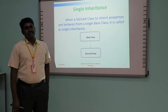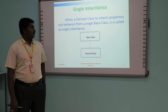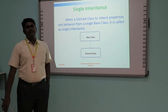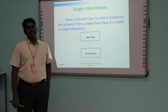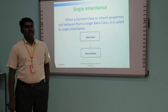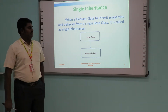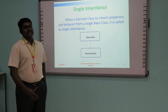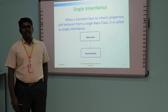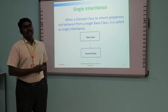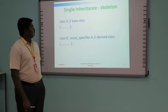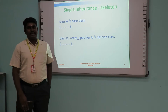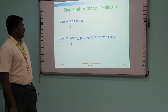We are going to discuss each in detail. First one is single inheritance. Here we have two classes: one is a base class and another one is a derived class. After derivation, the derived class has the properties of both the base class and the derived class.